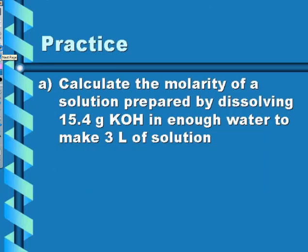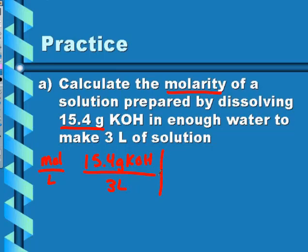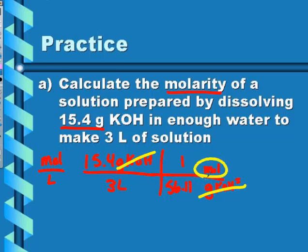If we're calculating the molarity of a solution prepared by dissolving a given number of grams of KOH in enough water to make a three liter solution, we need moles over liters. This isn't moles yet, but we can convert it. Whatever volume goes on the bottom — in this case three liters. I need to convert grams to moles: one mole of KOH is 56.11 grams from the periodic table. Grams cancel, leaving me with moles per liter.